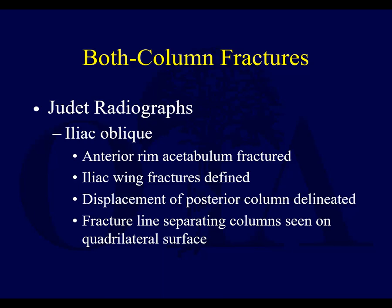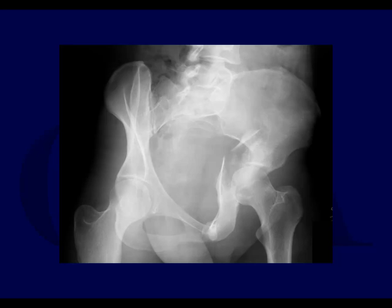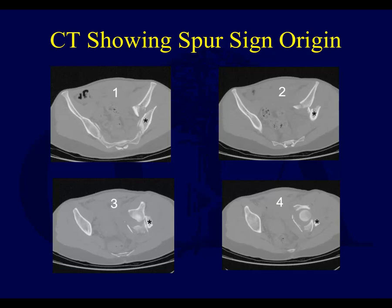The iliac oblique shows the anterior rim of the acetabulum fracture and the iliac wing fracture much better. You'll see how much the posterior column is fractured, and if there's a big iliac wing fracture coming up through here, you'll see it clearly. You'll also see the quadrilateral plate blowout and how displaced the posterior column fracture is. CT scans give you a sense of where the spur sign is — here's your sciatic buttress and that spike, and when you rotate to the obturator oblique view, you see that spike sticking out as the spur sign.